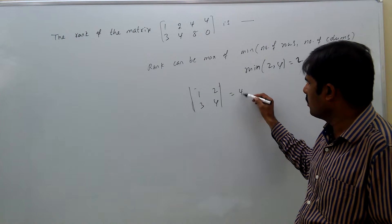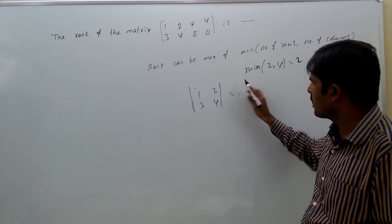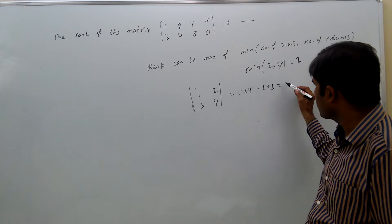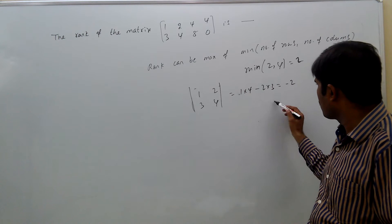It's ad minus bc. That is 1 times 4 minus 2 times 3, which equals 4 minus 6, that is minus 2. So this is not equal to 0.